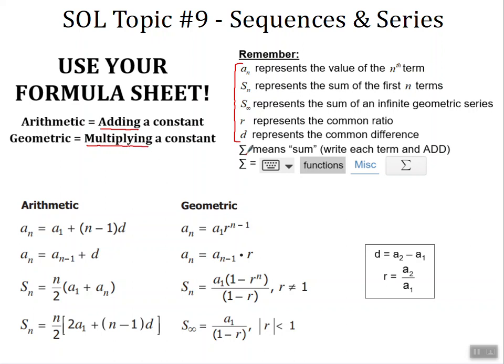When we see this big capital sigma, that means that we're talking about a sum. We can write each of the terms and add them together. If we need to find the sigma symbol on our Desmos online calculator, hit the keypad, go to functions, miscellaneous, and then you will find that symbol.